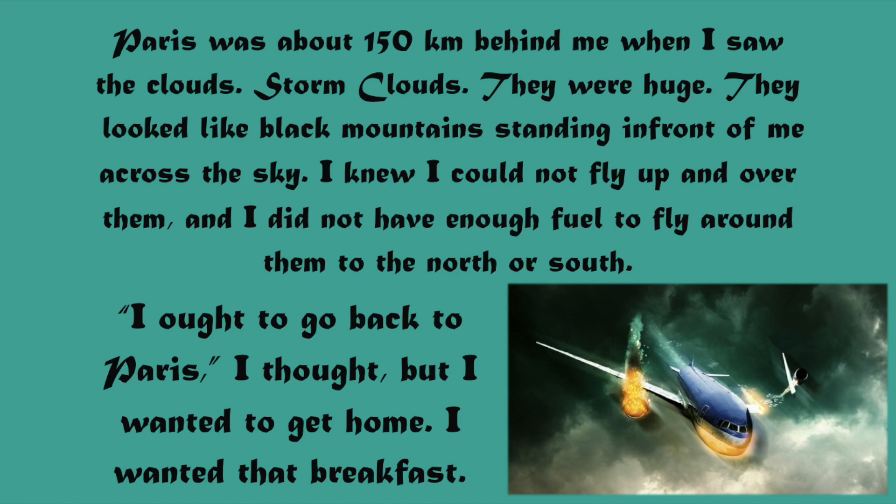Paris was about 150 kilometers behind him when he saw the clouds. They looked like black mountains standing in front of him across the sky. He knew he could not fly up and over them, and he did not have enough fuel to fly around them to the north or south. Everything was black outside the airplane. He could not fly up or down, or north or south, because of the very limited fuel he had remaining.